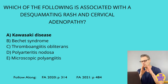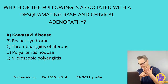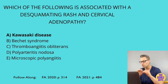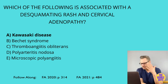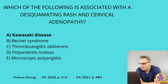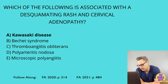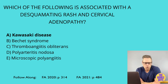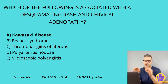Polyarteritis nodosa is seen in middle-aged men, usually affecting renal and visceral vessels. Many patients are also hepatitis B seropositive — keep that in mind in a vignette. Symptoms are nonspecific: fever, weight loss, headache, malaise, and abdominal pain. The histology shows different stages of transmural inflammation with fibrinoid necrosis. Arteriogram shows a string-of-pearls appearance — something unique to remember. Treatment includes corticosteroids and cyclophosphamide, which is an alkylating agent.